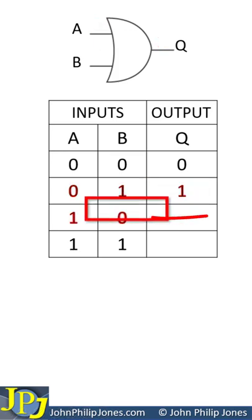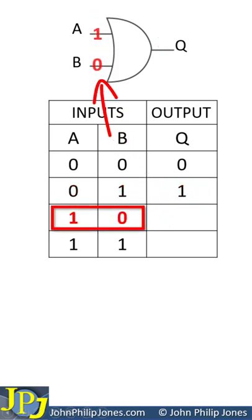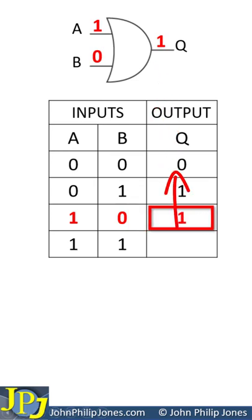Let's now consider the next combination that can appear at the input, and we can see we'll get a 1 at the output, which will appear here in the truth table.